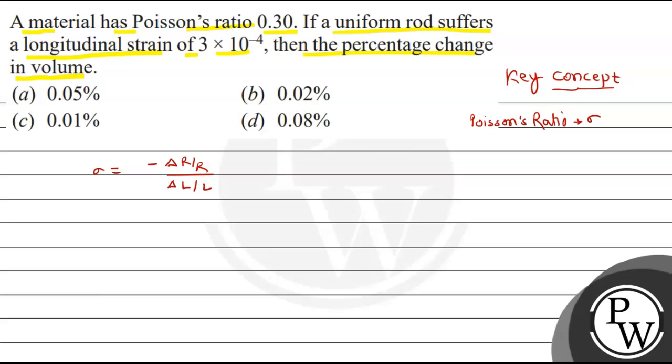We have to calculate percentage change in volume. Percentage change in volume, how do we count? Del V upon V calculate and multiplied by 100.